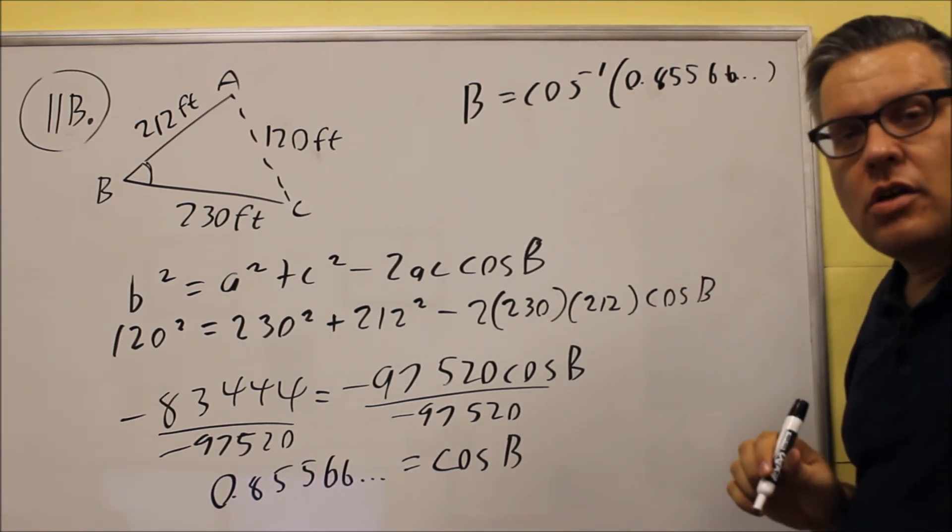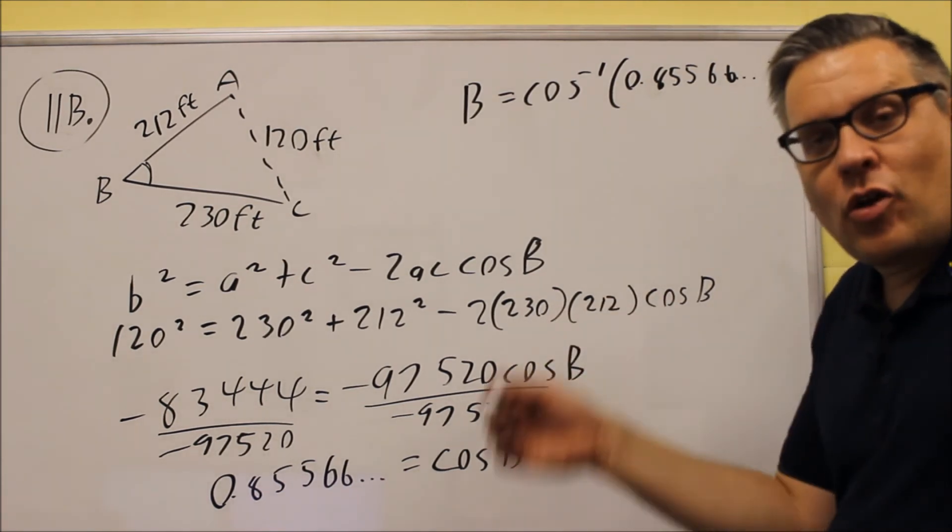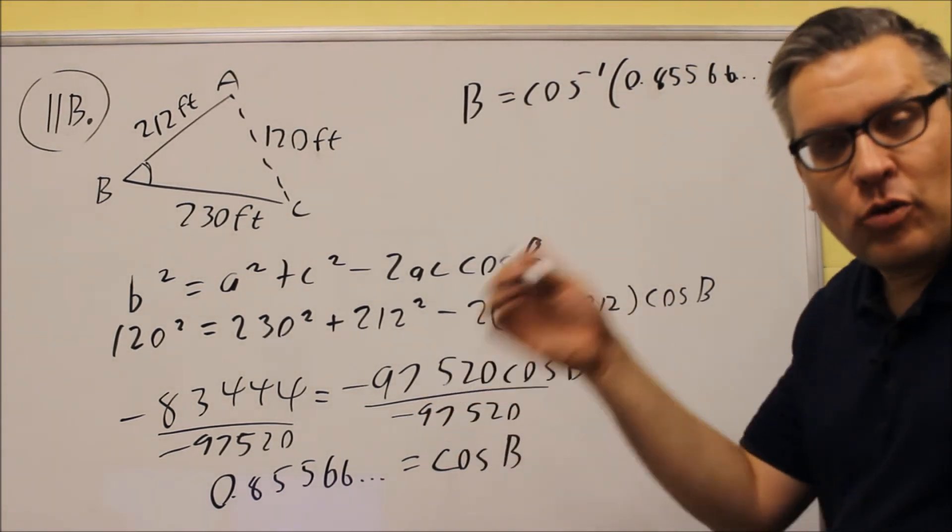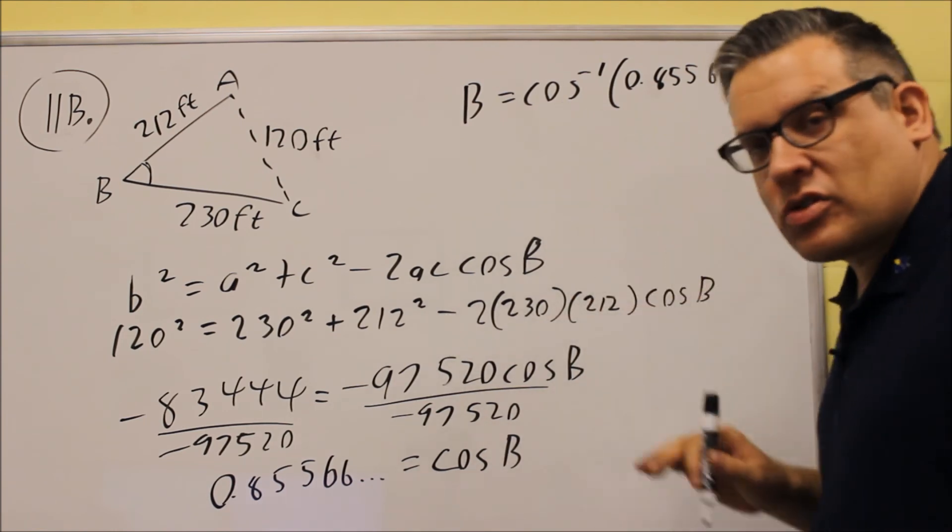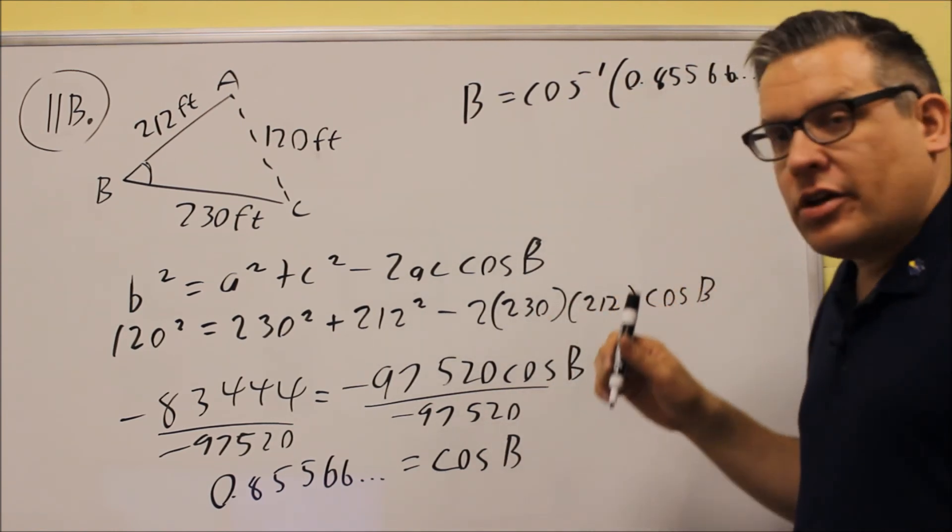Now, I want to take the inverse of that. Now, inverse cosines, you don't need to worry about having two answers for it. That only applies if you have inverse sine when you're working with triangles. If you have inverse cosines, you don't have to worry about that. Whatever answer you get here, automatically, that will be our correct answer for B.